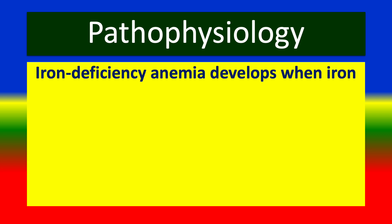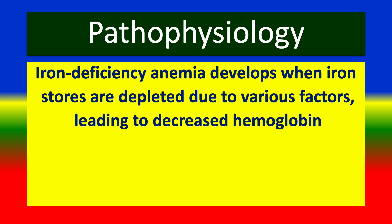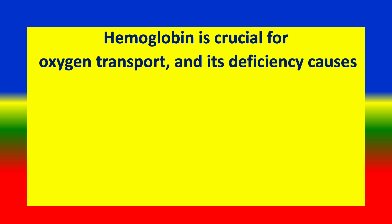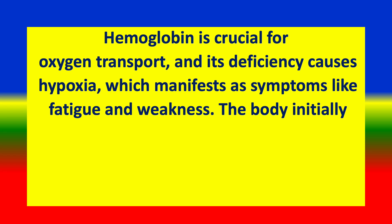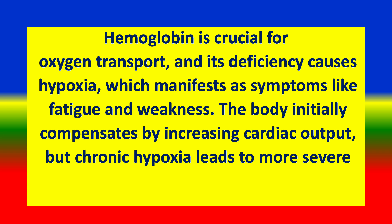Pathophysiology: Iron deficiency anemia occurs when iron stores are depleted due to various factors, leading to decreased hemoglobin production. Hemoglobin is crucial for oxygen transport, and its deficiency causes hypoxia, which manifests as symptoms like fatigue. The body initially compensates by increasing cardiac output, but chronic hypoxia leads to more severe complications.